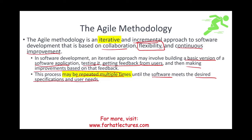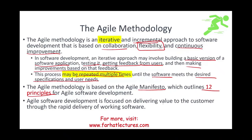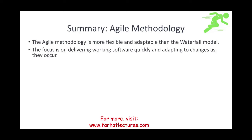Versus the waterfall, which has well-defined steps right from the beginning, and once a step is completed it's very hard to go back and change. The agile method is more flexible. It's based on the Agile Manifesto, which outlines 12 principles. Agile software development is focused on delivering value to the customer through rapid delivery of working software — just give me something to work with so I can see it, give feedback, and we'll go back and improve upon that. We don't have a clear picture of what the final product looks like. We expect changes, we like changes, we want changes — this is how the agile method works.